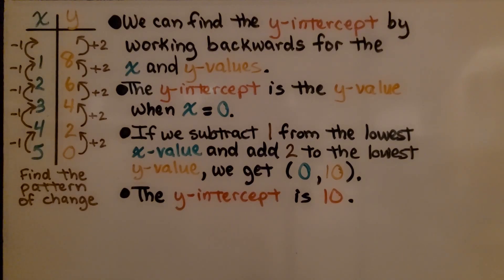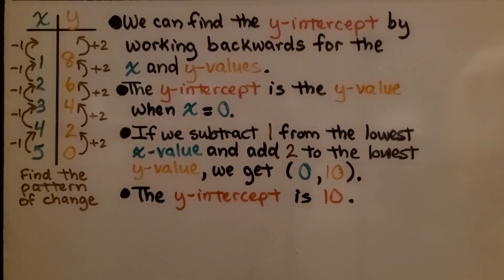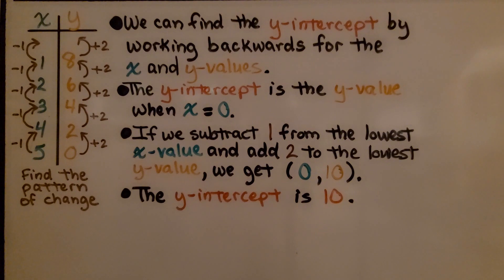We can find the y-intercept by working backwards for the x and y values. The y-intercept is the y value when x equals zero. We look for the pattern of change. This is going 5, 4, 3, 2, 1, so we know we're subtracting 1 each time.